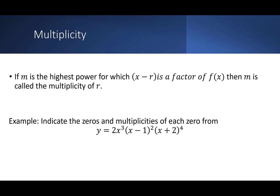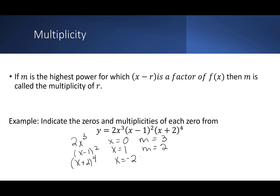Let's look at y = 2x³(x − 1)²(x + 2)⁴ and find the zeros and multiplicities. From 2x³: zero at x = 0, multiplicity m = 3. From (x − 1)²: zero at x = 1, multiplicity m = 2. From (x + 2)⁴: zero at x = −2, multiplicity m = 4. Adding the multiplicities: 3 + 2 + 4 = 9, which is the degree of the polynomial.